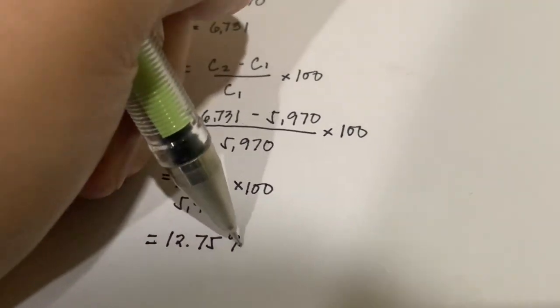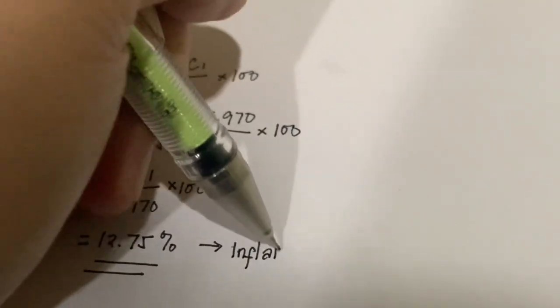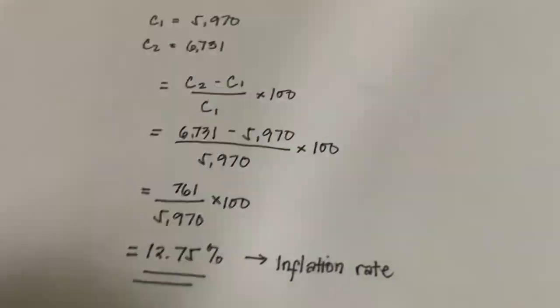Now we already know the inflation rate using the basket cost and consumer price index. Let's proceed to question number two: how do you use tax in addressing inflation and recession? Inflation is the overall increase of prices in the economy. Increase in consumer spending equals an increase in demand, which is the reason why most business sectors are increasing their prices.